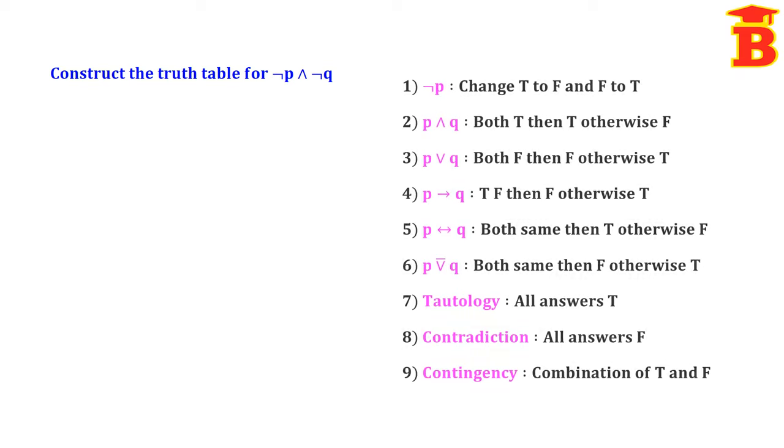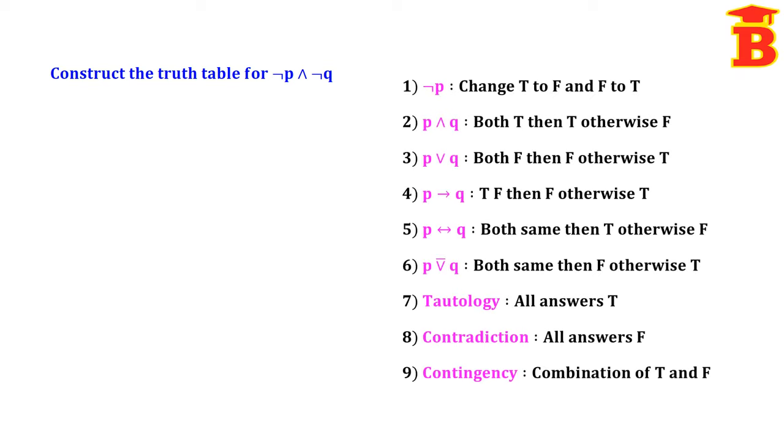Now let us see the problems. Construct the truth table for NOT P AND NOT Q. We have to draw the truth table and use the conditions. Instead of remembering all the tables, it is very easy if we remember these conditions.